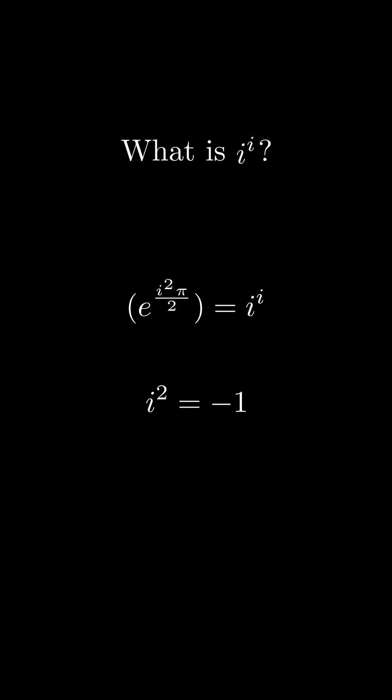Remember, i squared is negative 1, so i to the i is equal to exactly e to the negative pi all over 2, or about 0.2079, which surprisingly is a real number.